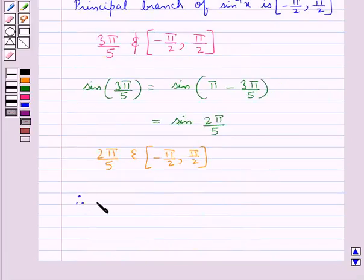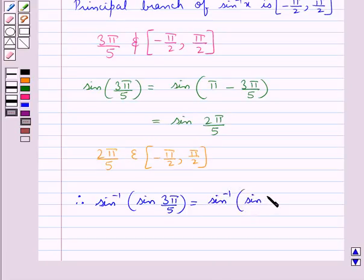Therefore, sine inverse of sine 3 pi by 5 is equal to sine inverse of sine 2 pi by 5, since here we have sine 3 pi by 5 is equal to sine 2 pi by 5.